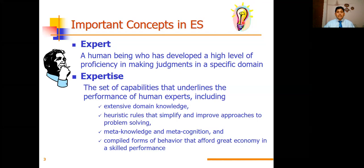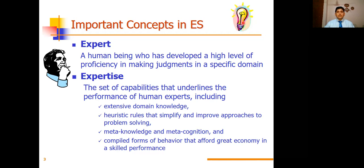Expertise is basically the state of capabilities that underlie the performance of human experts, including extensive domain knowledge. Some experts are in health, some in education, and some in other technical and non-technical fields — all these are extensive domain knowledge-based domains. Expert systems take the knowledge of those experts working in different domains, as well as heuristic rules — rules that simplify and improve approaches to problem solving.